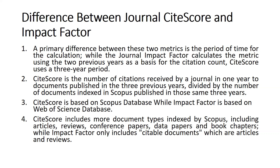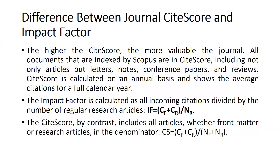Impact Factor only includes citable documents, which are articles and review articles. So in CiteScore, any citation relevant to articles, reviews, conference papers, data papers, book chapters, etc., would be counted. But for Impact Factor, only journal articles and reviews are included.